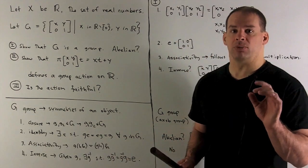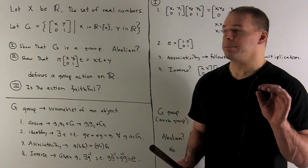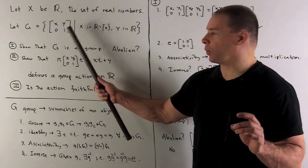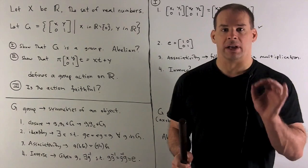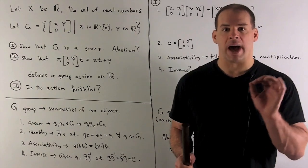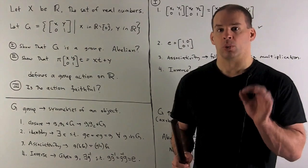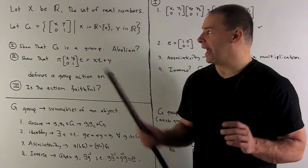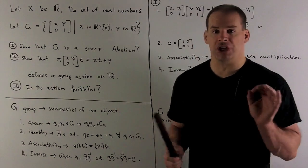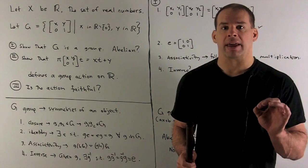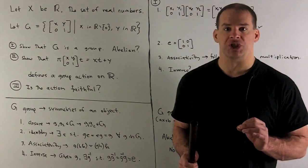Closure means if we take any two elements of the form X, Y, zero, one and multiply them together, do we get another matrix of the same form? For the identity, we're looking for a matrix where if I multiply any of our elements in G by that matrix, we get that element back, and that element also has to be in G.